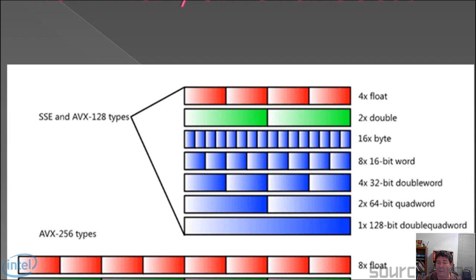How many simultaneous pieces of data can it add? Well, it depends on how big the data is. In the best case it can add 16 bytes at a time. For shorts or words it'll add eight of them, and for 32-bit integers it goes on down from there.